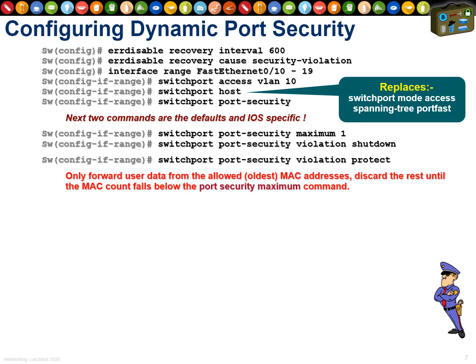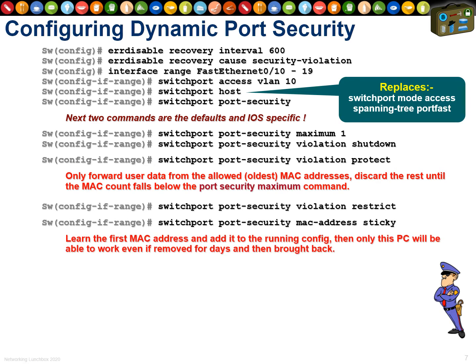There are other violation modes. 'Switchport port-security violation protect' doesn't shut down the port — it learns the first MAC address, uses it, and if a second comes along, just ignores it and chucks it in the bin. 'Switchport port-security violation restrict' is identical to protect except for one difference we'll see shortly. Both allow the first MAC address to work while silently (or not so silently) dropping others.